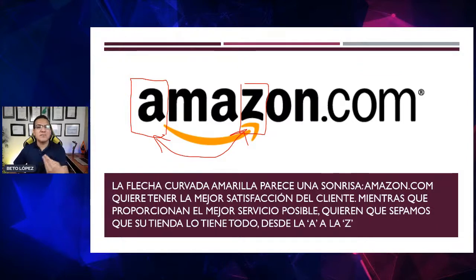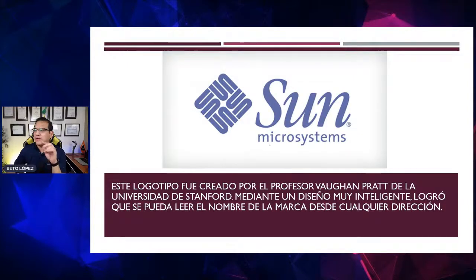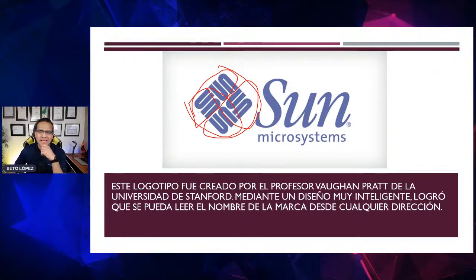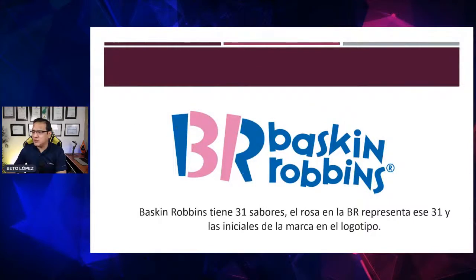Estamos viendo cómo las marcas se potencializan y dónde está el truco. No es solo colocar una foto, es meterle coco al logotipo. SUN Microsystems es interesante porque en donde quiera que se lea el cuadro, se lee SUN. Es muy interesante la forma en que se lleva ese cuadro de un lado al otro. También hay 31 sabores en Baskin Robbins, y en el logo se determinan los 31 sabores y además están la B y la R de Baskin Robbins.